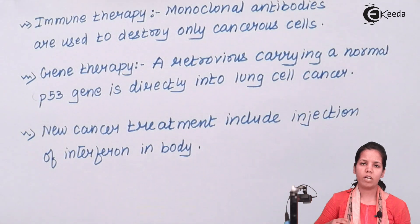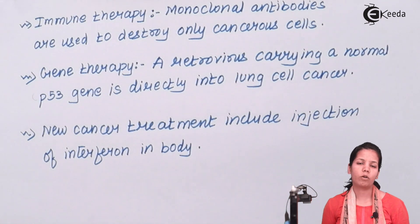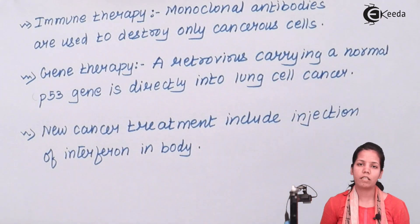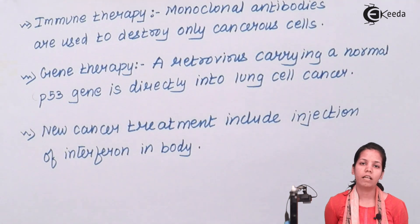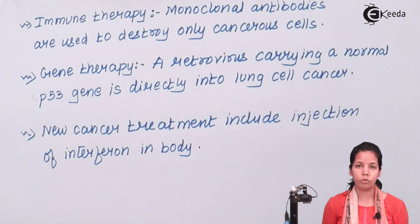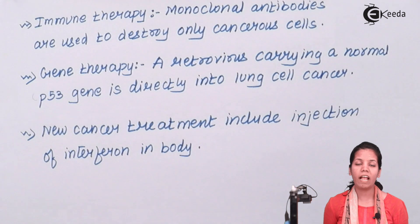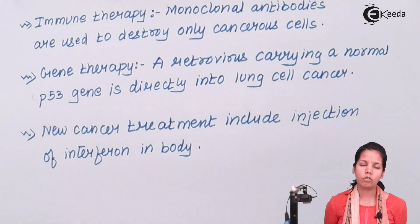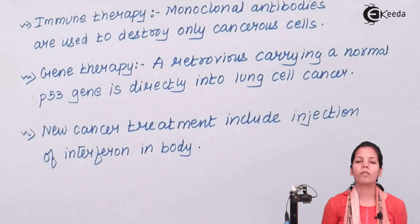Students, in this part of the chapter what we covered was the different types and different options available for treatment of cancer. Which option an individual should use depends upon their health condition and which stage of cancer they are at. I hope students you are all very clear about this concept. Thank you.